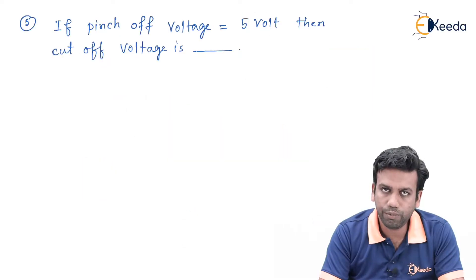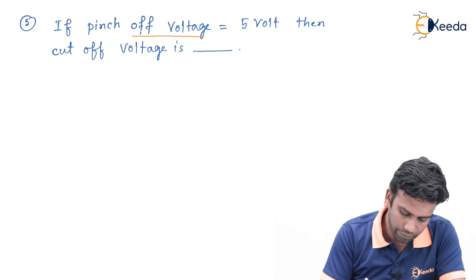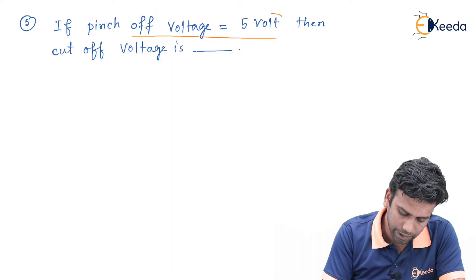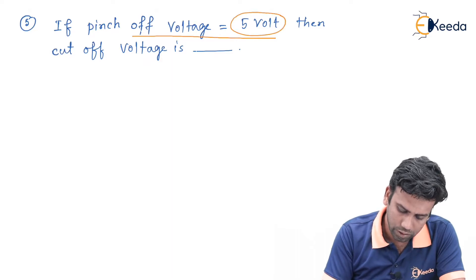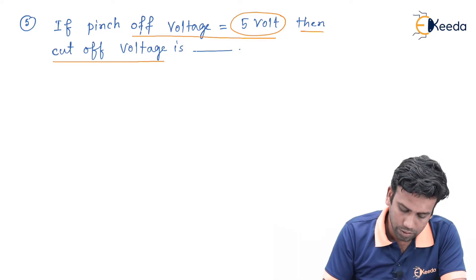According to the given numerical, if the pinch-off voltage of a JFET is given by 5 volt, then what will be the cut-off voltage of that JFET?